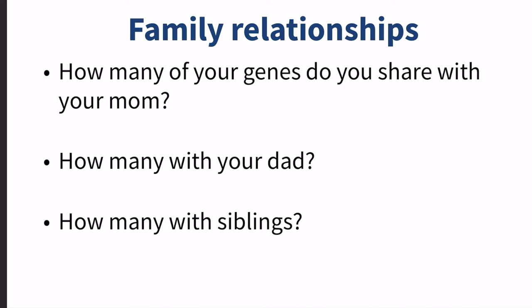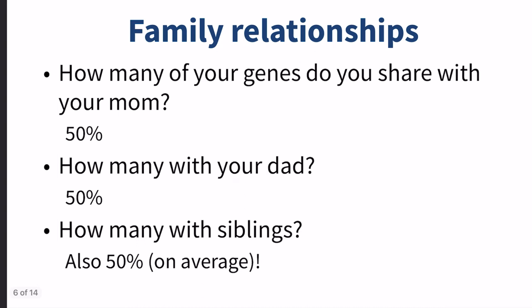Questions to think about: how many of your genes do you share with your mom, your dad, and your siblings? With your mom, you have about 50% of her genes, because you have half of your chromosomes from mom and half from dad — so 50% shared with mom and 50% shared with dad. On average, it's also about 50% of genes shared with your siblings. This can be higher or lower depending on independent assortment, but on average it's about 50%.